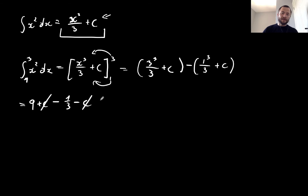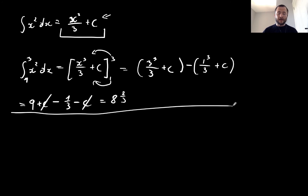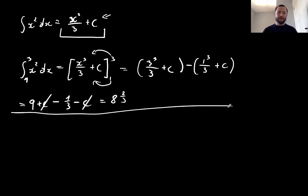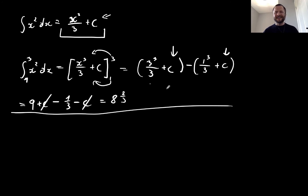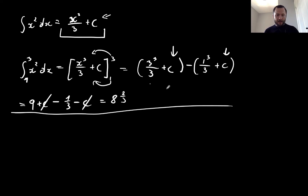I end up with 9 minus one third, which equals 8 and two thirds. So this is how we find the definite integral — or the value of the integral of a function between two given boundaries. The key thing to recognize is that the constant of integration disappears, so we don't need to worry about it when taking the definite integral.